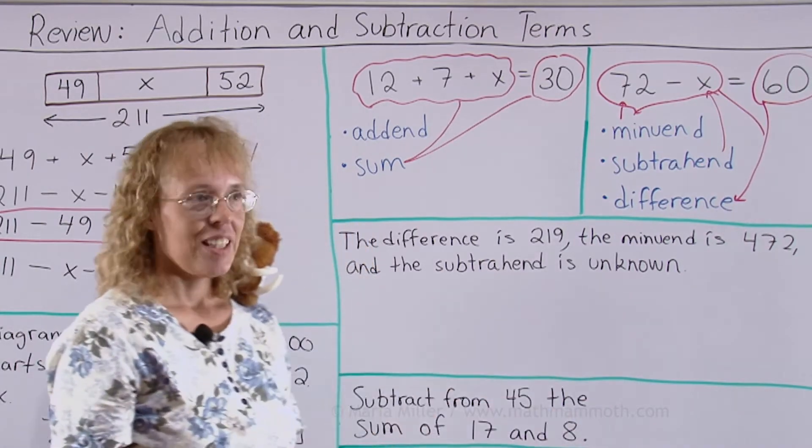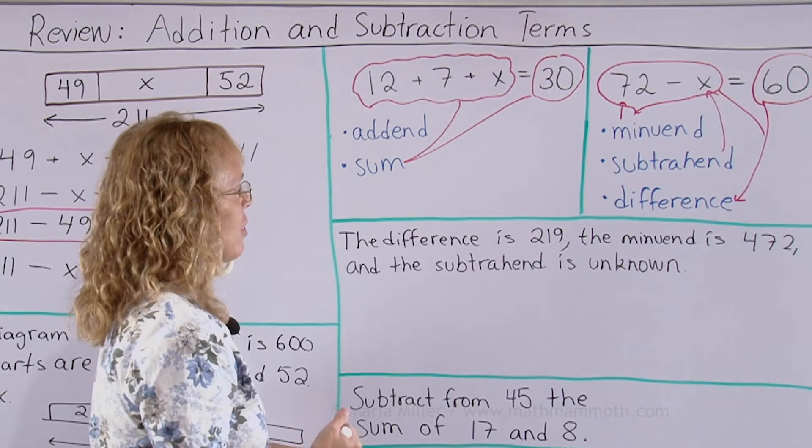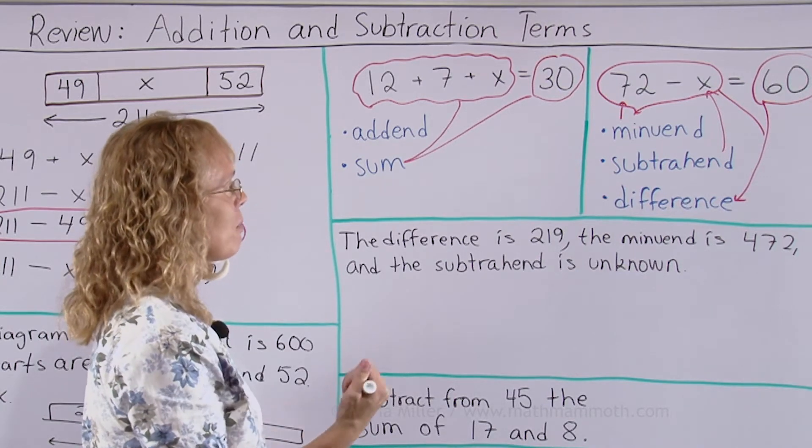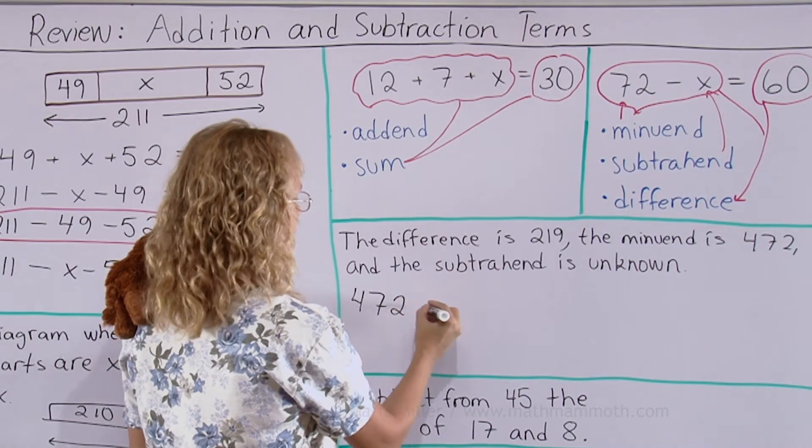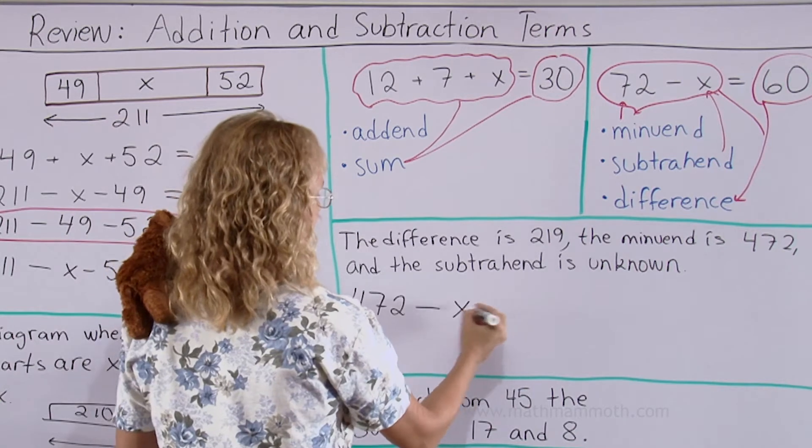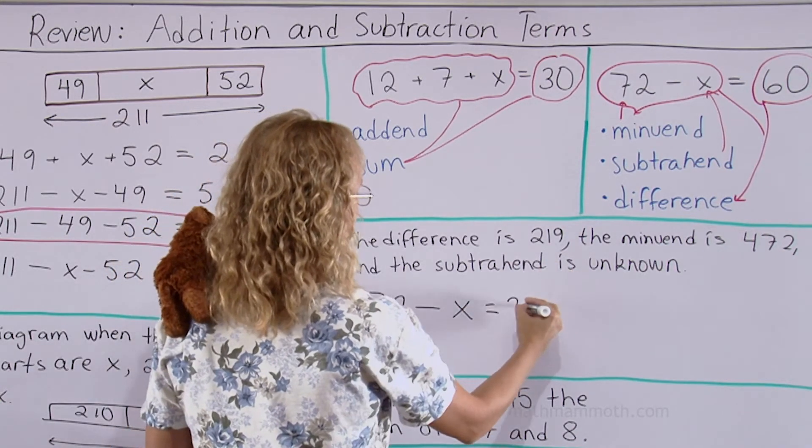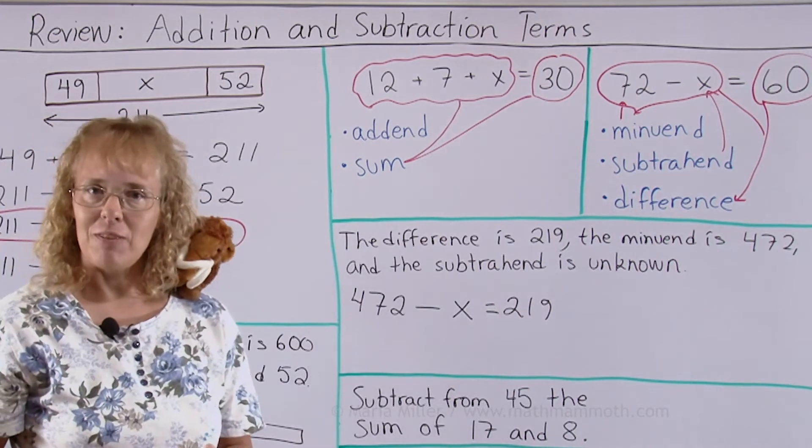We have an unknown there and so we better use x. The difference is 219, the minuend is 472. Let's start with the minuend then we write the subtrahend but since we don't know it we write x and the answer the difference is 219.